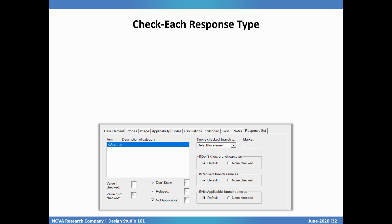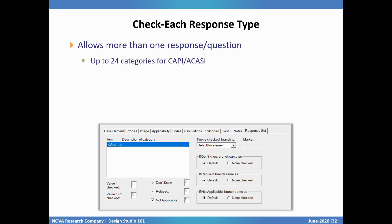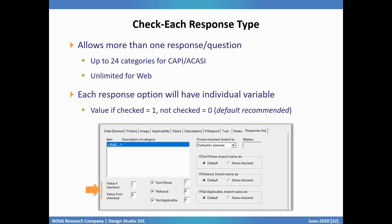Next, if you have questions where respondents will be able to choose more than one response, you'll use the Check Each response type. It allows up to 24 category choices in either CAPI or ACASI, but it can be unlimited in QDS Web. Each response option will have an individual variable associated with it where 1 is the value for Checked and 0 for Not Checked.